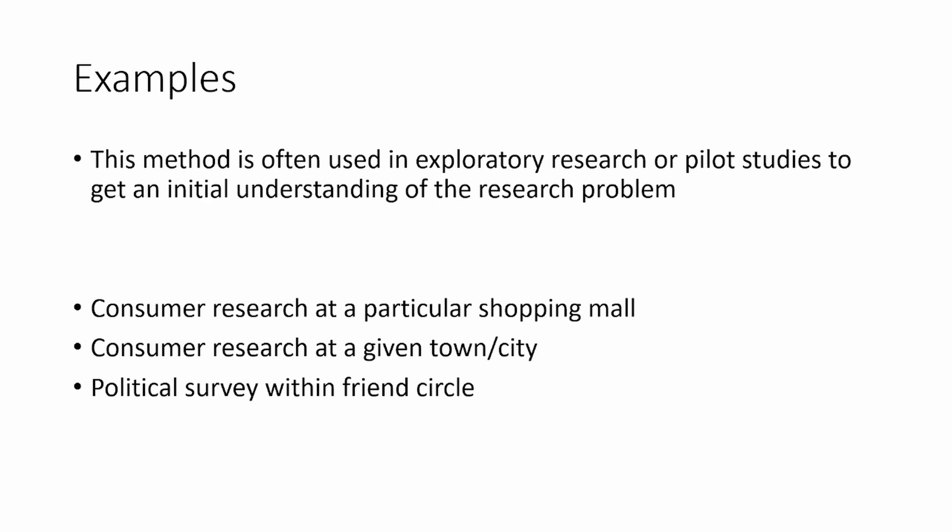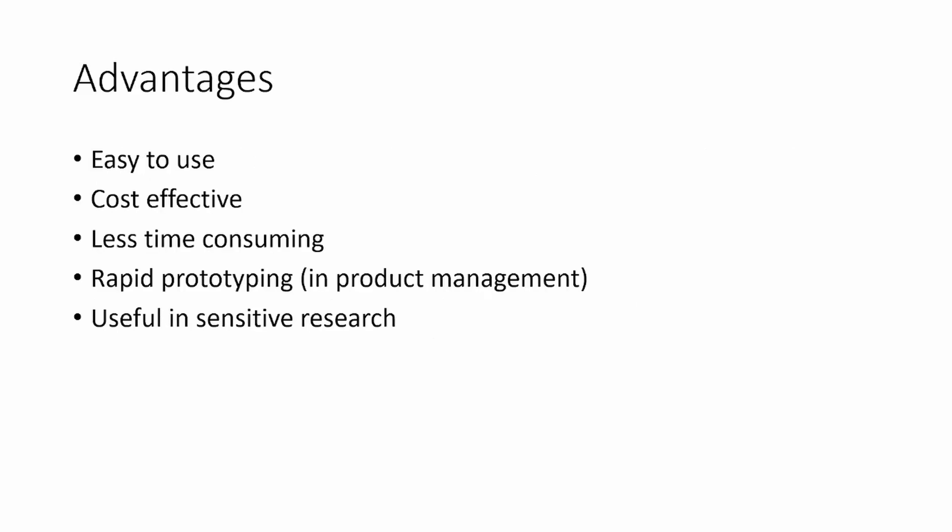Other examples include political parties doing surveys and research about a certain policy. They may not have a lot of time, so they would do it in certain towns or cities instead of all cities, villages, and towns within the country. Accidental sampling is used quite heavily there as well.